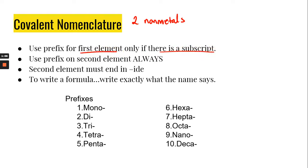Remember subscripts are the little things that follow the letters. You always use a prefix on the second element. So the prefix mono is only used for the second element if there is one of them. We would never say mono for the first element.